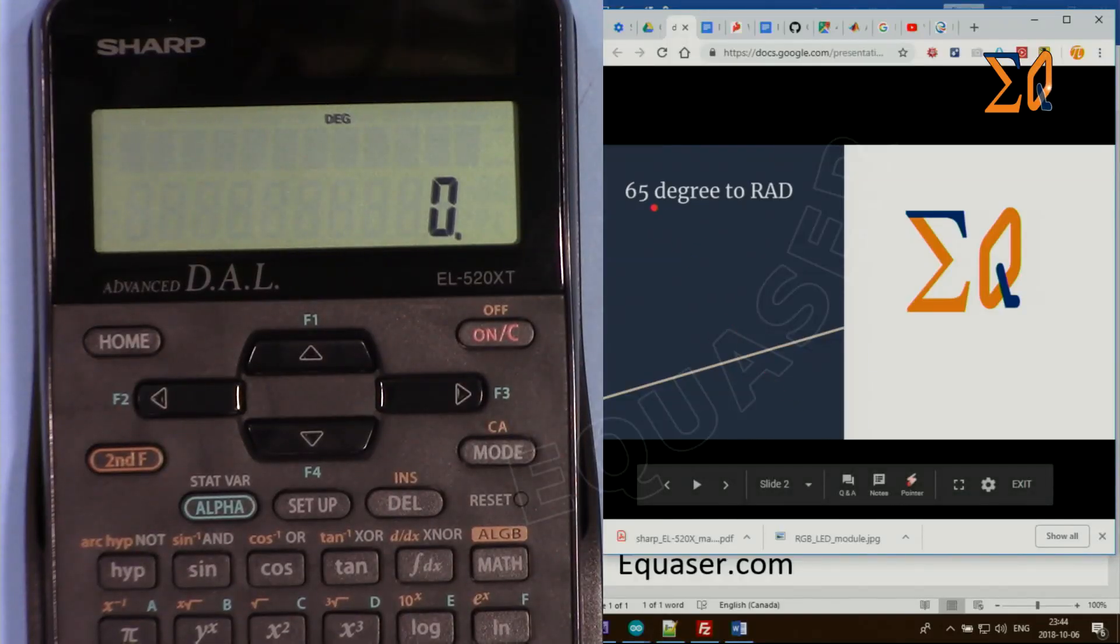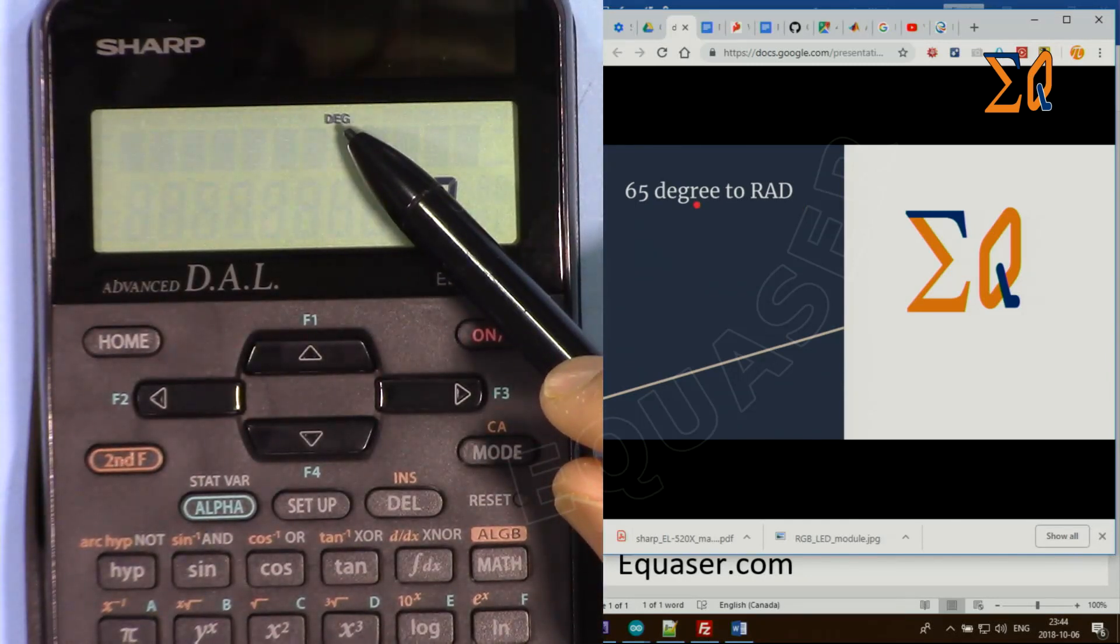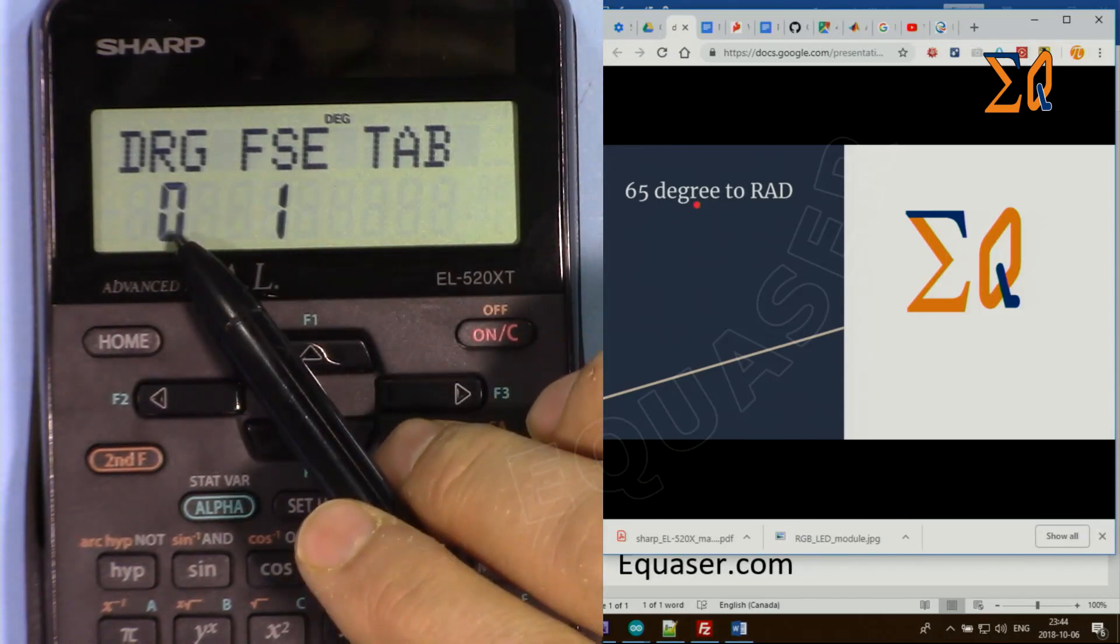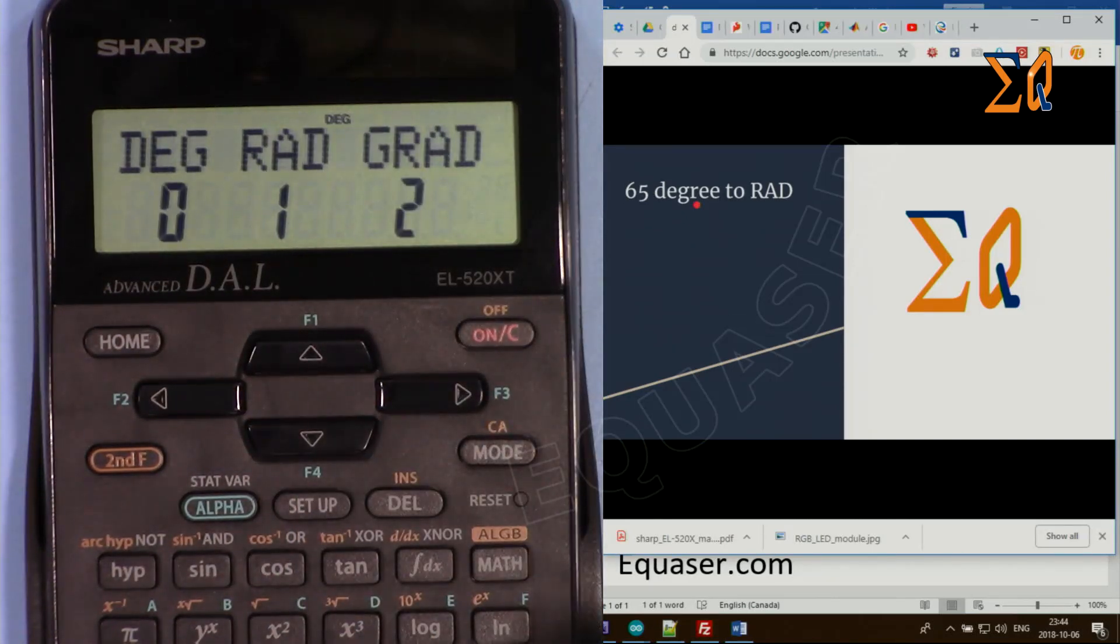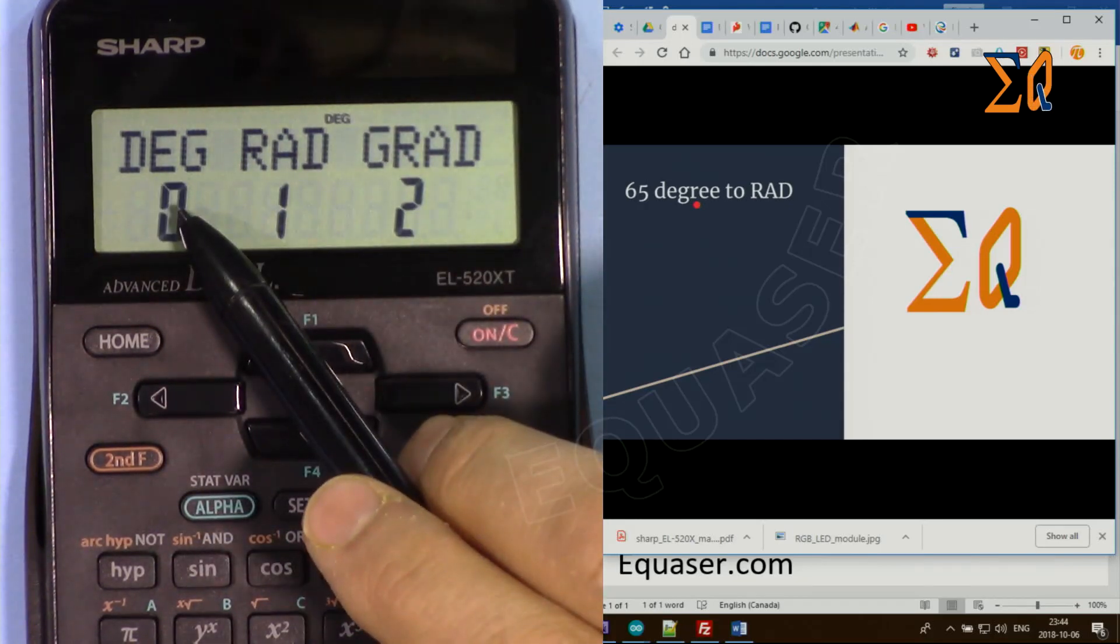Let's say you have 65 degrees and you want to convert it to radians. In order to convert it, we have to be in degree mode. If you're not in degree mode, press Setup and DRG. Here, press 0. I'm pressing 0 now, and then select the right one. This is degree. I'm pressing degree.